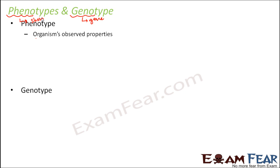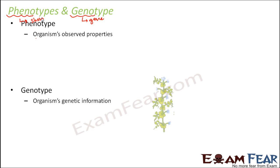Genotype means the genetic composition — it is the organism's genetic information. When we talk about a tall plant, tall is its phenotype. So what is the genotype of a tall plant? The genotype is basically the composition of the gene — the gene which represents its height. For a tall plant, the genotype will be capital T, capital T. That means it has taken the tall trait from its father and the tall trait from its mother. So tall is the phenotype and the genotype is TT.